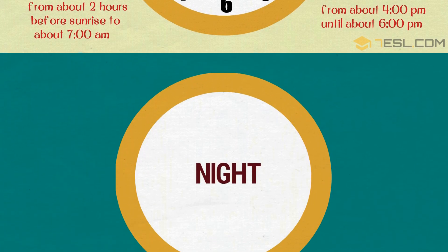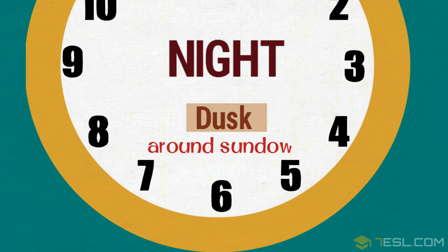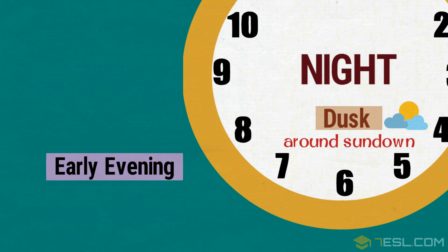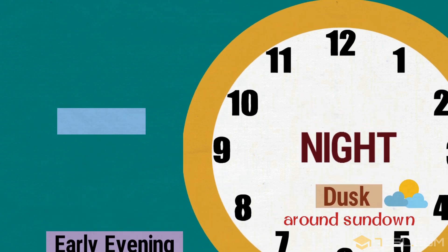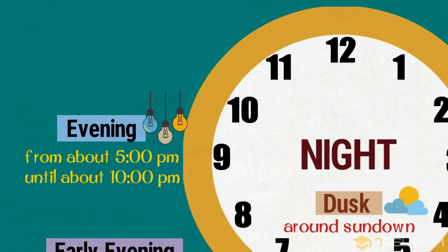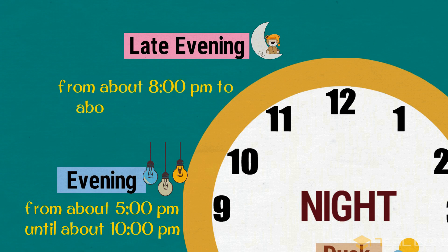Dusk — around sundown. Early evening — from about 5 p.m. to about 7 p.m. Evening — from about 5 p.m. until about 10 p.m. Late evening — from about 8 p.m. to about 10 p.m.